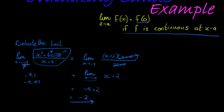But you'll never get to negative 2, because you can never get to negative 4 with the x. So this limit is negative 2, but f of negative 4 is not equal to negative 2 - it's undefined.